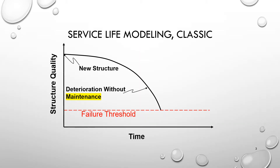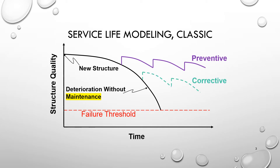This is a classic Service Life Modeling structure — quality versus time — of a new structure and how it can reach a failure threshold relatively quickly without any maintenance. Whereas performing preventative maintenance can help a structure last maybe 100 years instead of 20. Sometimes we perform corrective maintenance; if preventative maintenance isn't enough, it'll cost more and generally won't give us the full life of the structure that we want, but it'll still approach it.